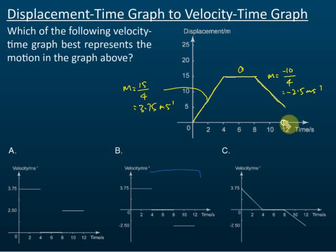So after we get the speeds: 3.75, then 0, and negative 2.5. From 0 to 4, the velocity is 3.75. Then 4 to 8, the velocity is 0. And 8 to 12, the velocity is negative 2.5.